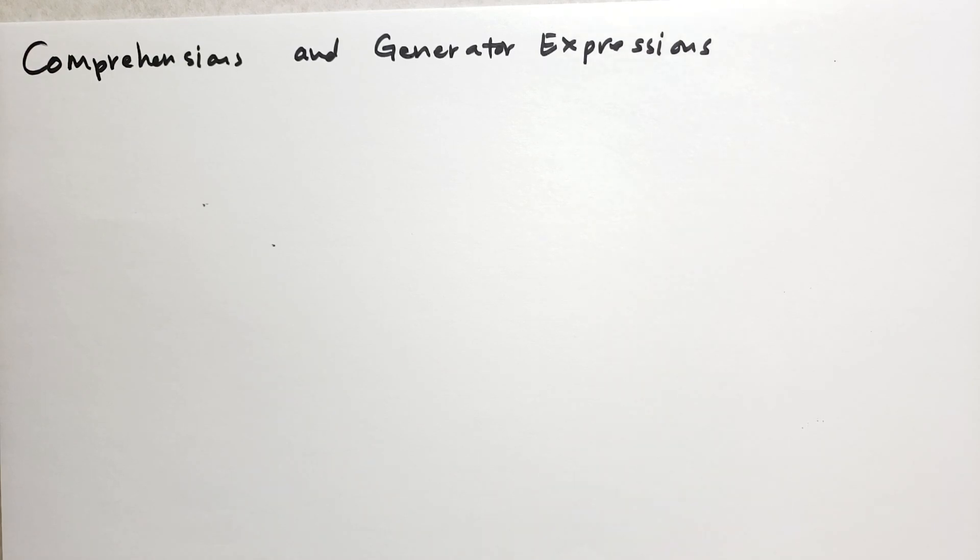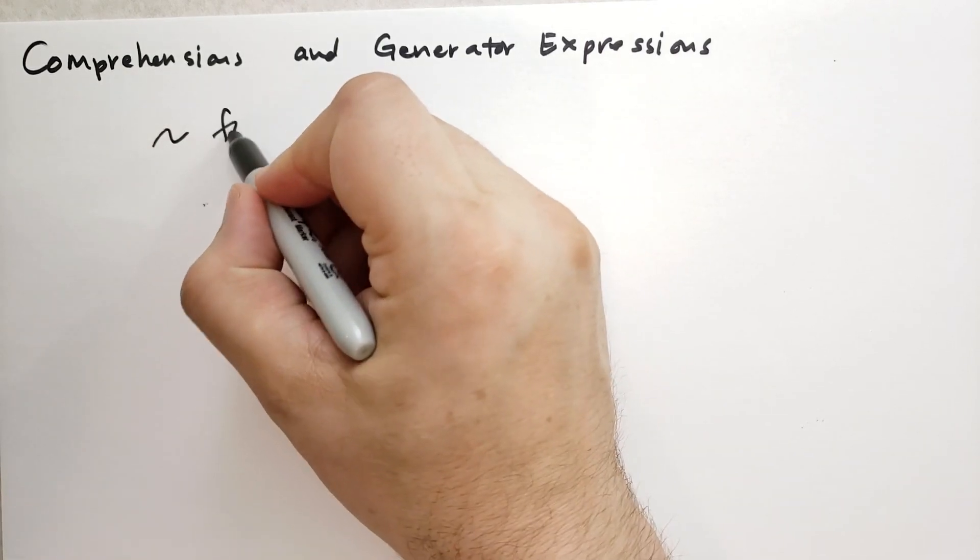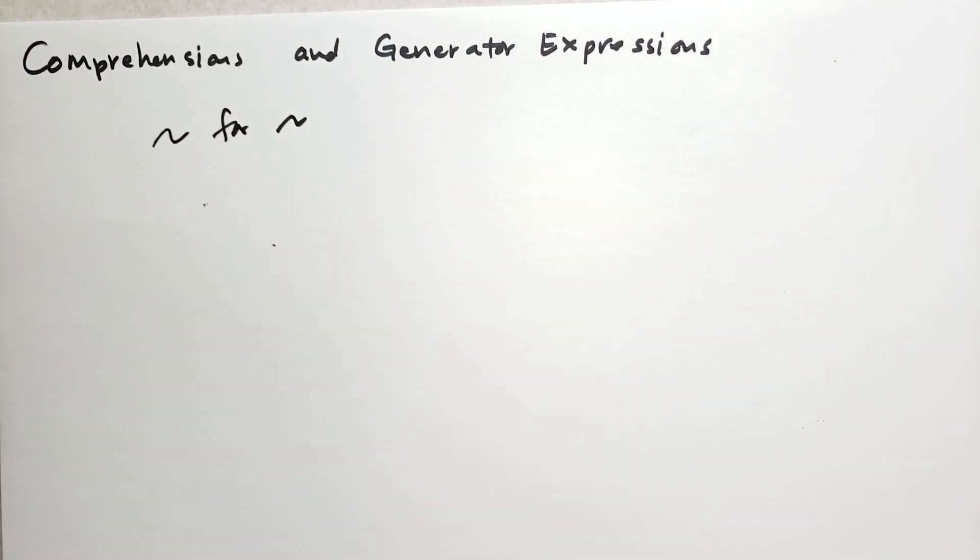A comprehension is a special bit of syntax that can appear almost anywhere an expression list is allowed. It is recognizable by the keyword 'for' in the comprehension. So you'll see something for something and you'll know that that's a comprehension.